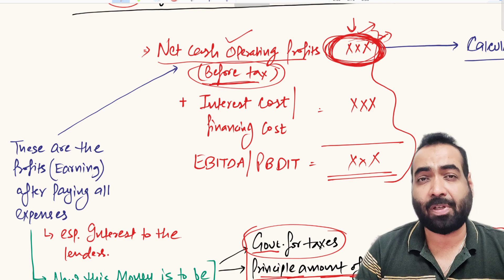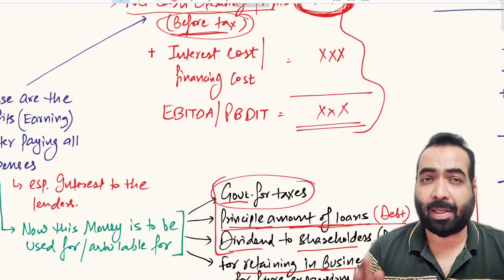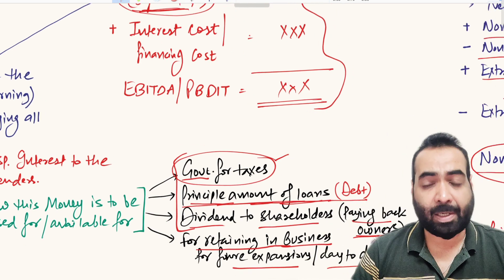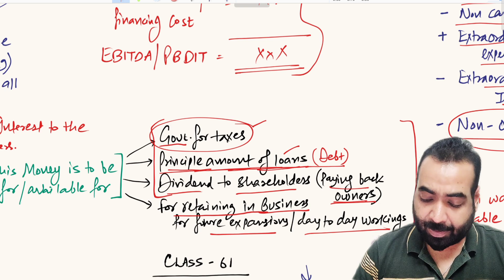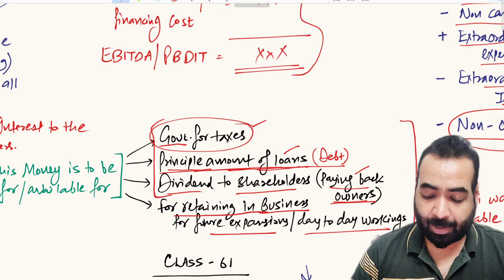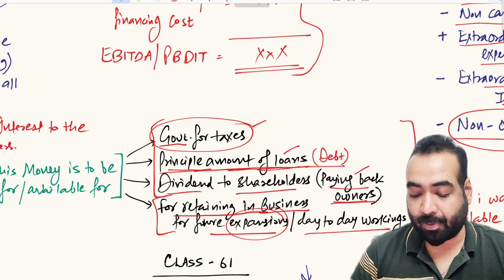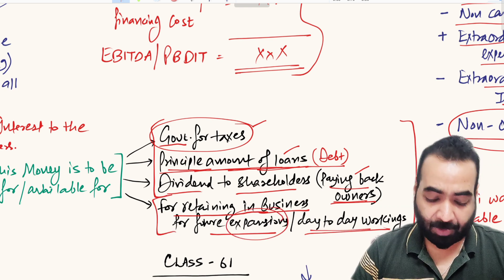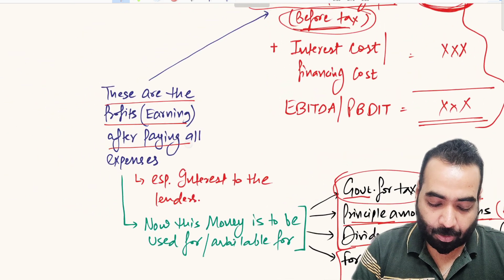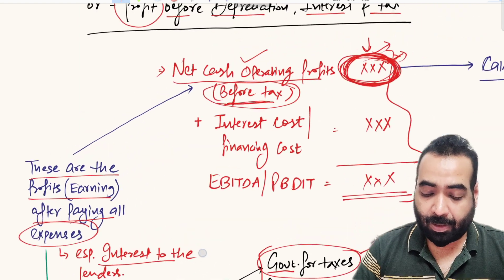So remember: this profit — in which interest is already deducted — can be used to pay three parties: first, the government; second, your debt financers; and third, your equity shareholders or owners. If anything is left, it will be used for business expansion plans or day-to-day working capital management. These are the profits and earnings after paying all expenses, with interest also already paid.